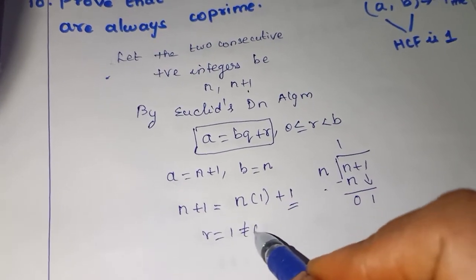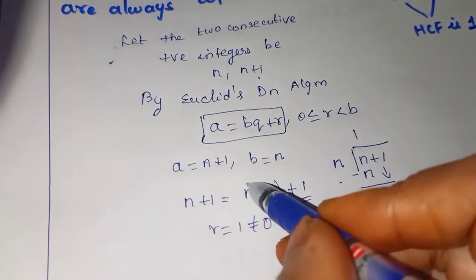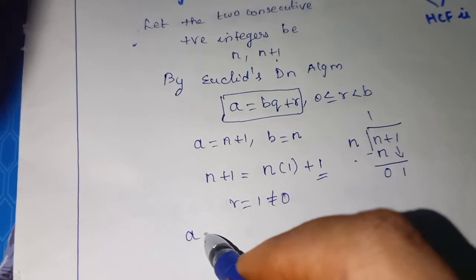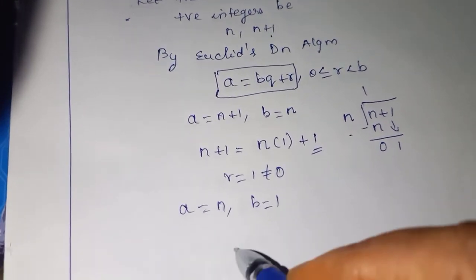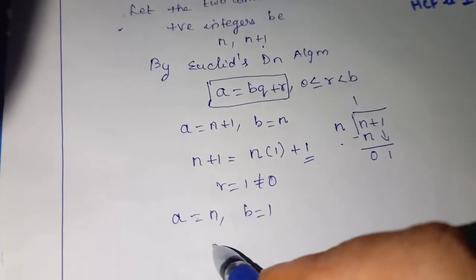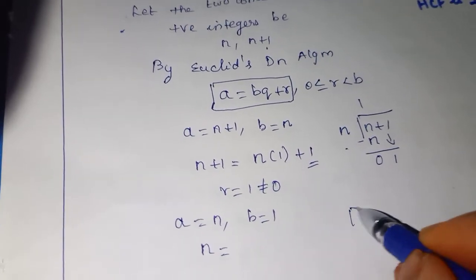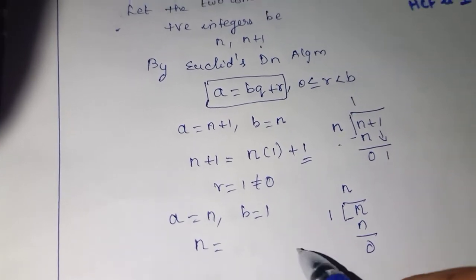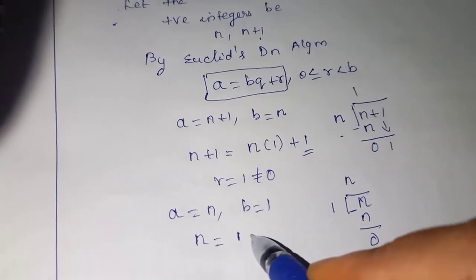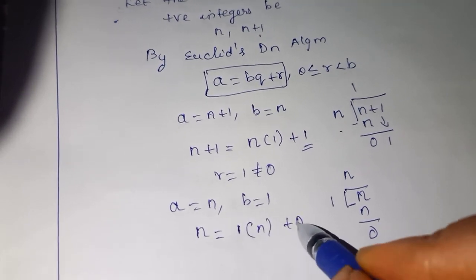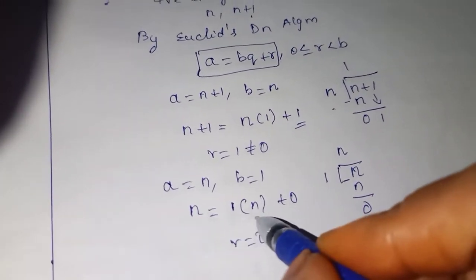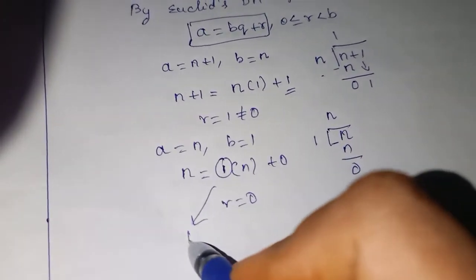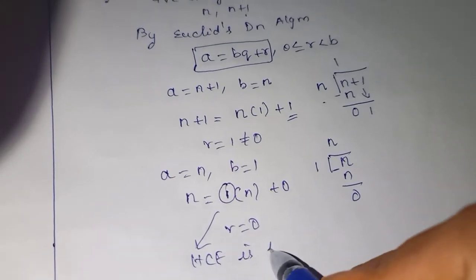The remainder is 1, which is not equal to 0. So we write: n plus 1 equals n times 1 plus 1. Now A becomes n and B becomes 1. Applying Euclid's division algorithm again: n equals 1 times n plus 0. The remainder is 0. So the divisor, which is B equal to 1, is the HCF. Therefore, HCF is 1.